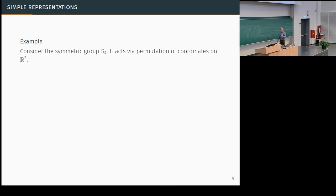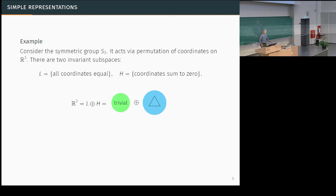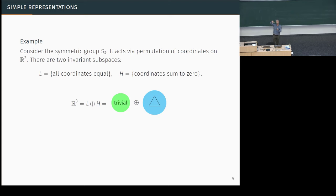I'm using higher representations to understand good old representations. The symmetric group S3 is the permutations of three elements, and it acts by permutation of coordinates on R³. Inside R³, you can look at the sum of the coordinates — slices with sum of coordinates constant are preserved by this permutation action. There's also the orthogonal axis spanned by (1,1,1), and so we can break the representation up into two pieces, a simple example of a direct sum decomposition.